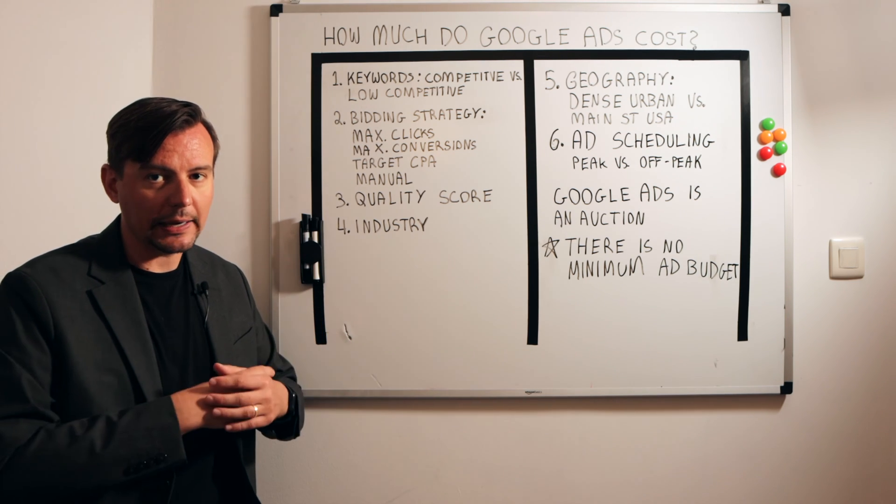Some industries are going to be more expensive — insurance, health, legal. These are very expensive industries because you have big multi-billion dollar players spending millions of dollars a day on Google. But that doesn't mean you can't slip in there and have your own set of keywords that will convert.